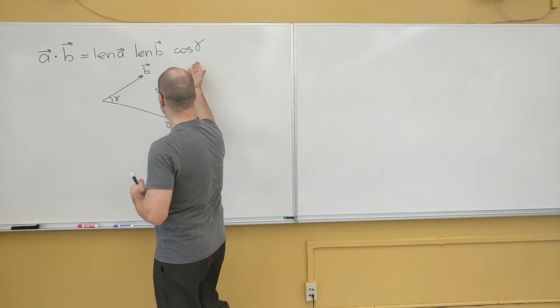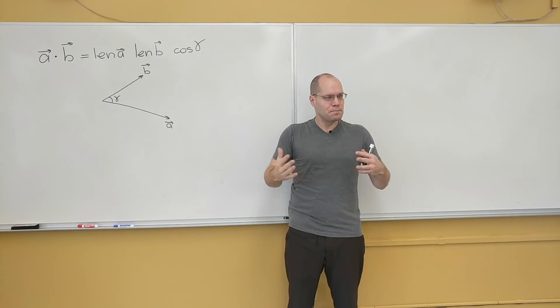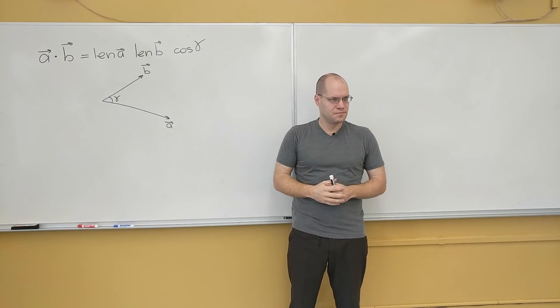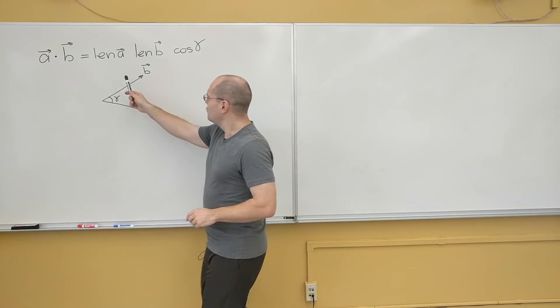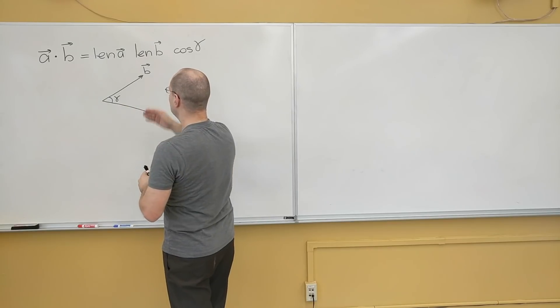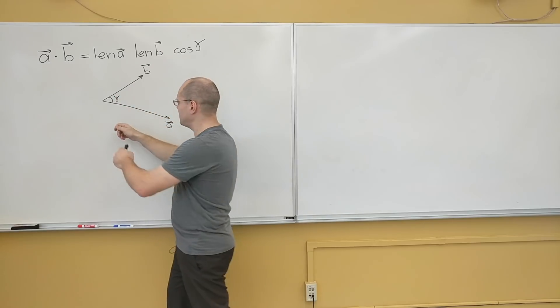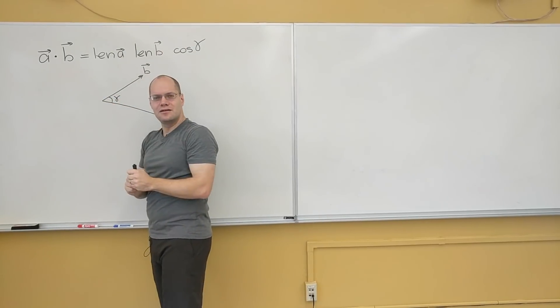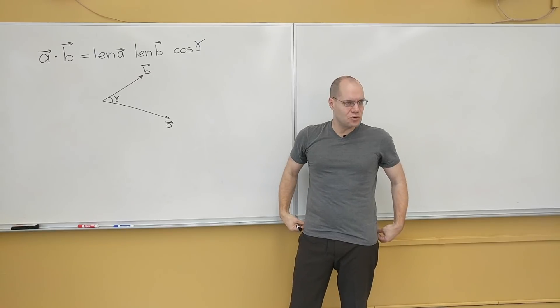This quantity, this number, does not on its own, out of context, represent anything physical. It uses physical elements in it. We know what the length represents. It's the length of the vector a. Same for the length of the vector b. We know what the angle represents. If we had a protractor, we could measure this angle. Each one of those are very intuitive physical quantities.